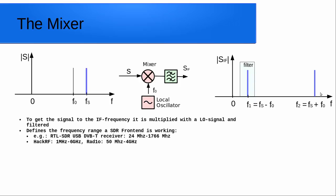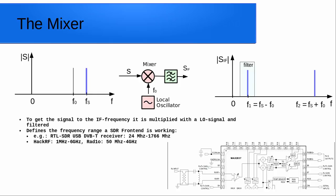The mixer defines the frequency range the SDR front end works on. For example, the quite cheap RTL-SDR USB sticks — originally made for DVB-T reception — work from 24 MHz up to 1766 MHz. The HackRF is also an often-used SDR front end and works from 1 MHz up to 6 GHz. The Radio Badge from the CCC Camp 2015 works from 50 MHz up to 4 GHz. Here for example is the mixer chipset of the HackRF, where you can see the IQ mixing part.